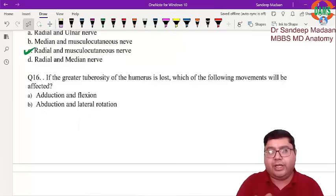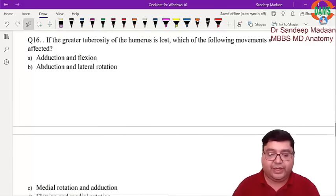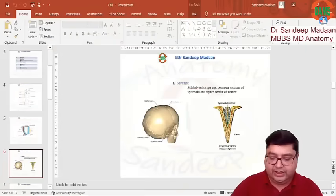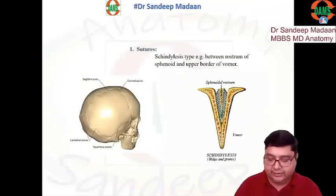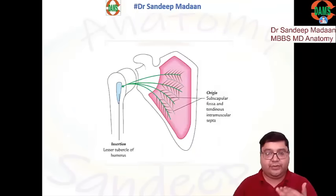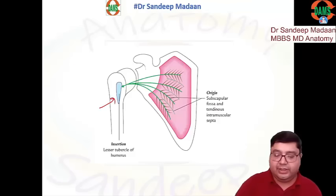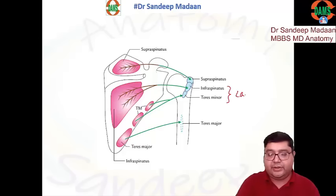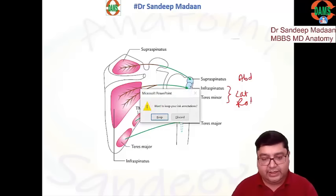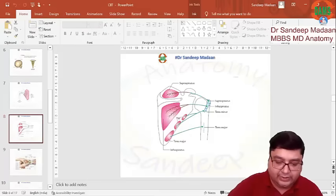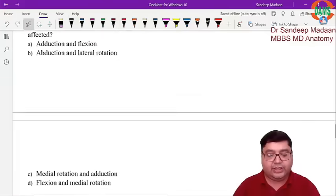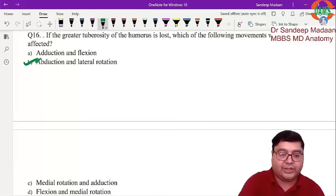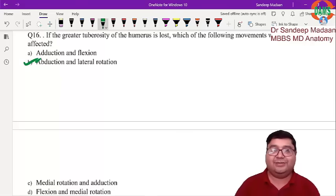Next question: if the greater tubercle is lost, which movements will be affected? Three muscles attach to the greater tubercle: supraspinatus, infraspinatus, and teres minor. Subscapularis is attached to the lesser tubercle. Infraspinatus and teres minor are lateral rotators, and supraspinatus performs abduction. Therefore, if the greater tubercle is lost, lateral rotation and abduction will be lost. The answer is option P. Thank you everyone, take care, all the best.